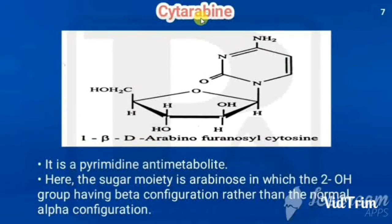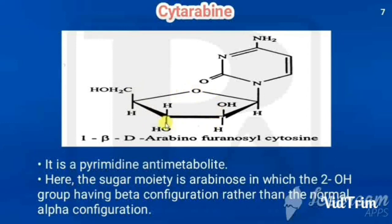The next drug is cytarabine. The structure of cytarabine also contains pyrimidine: the second position has a ketone and the fourth position has an amino group, with a hydrogen at the first nitrogen. The sugar attached here is called arabinose or arabinofuranose. It has a similar structure to ribose but is not ribose — it is arabinose. Both ribose and arabinose are epimers.